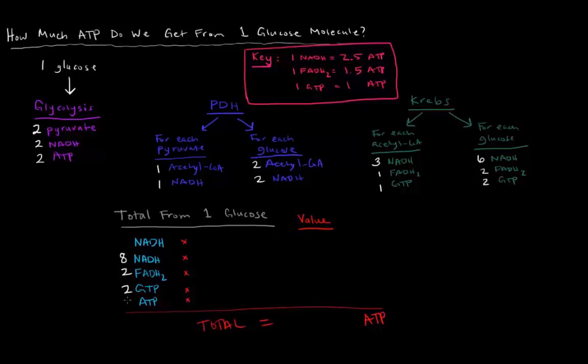Now, glycolysis, we had two ATP's, and we had two NADH's. You might be wondering why I wrote two NADH's, these two NADH's, separately. This is very, very important, because glycolysis occurs in the cytosol, while these two pathways both occur in the mitochondrial matrix.